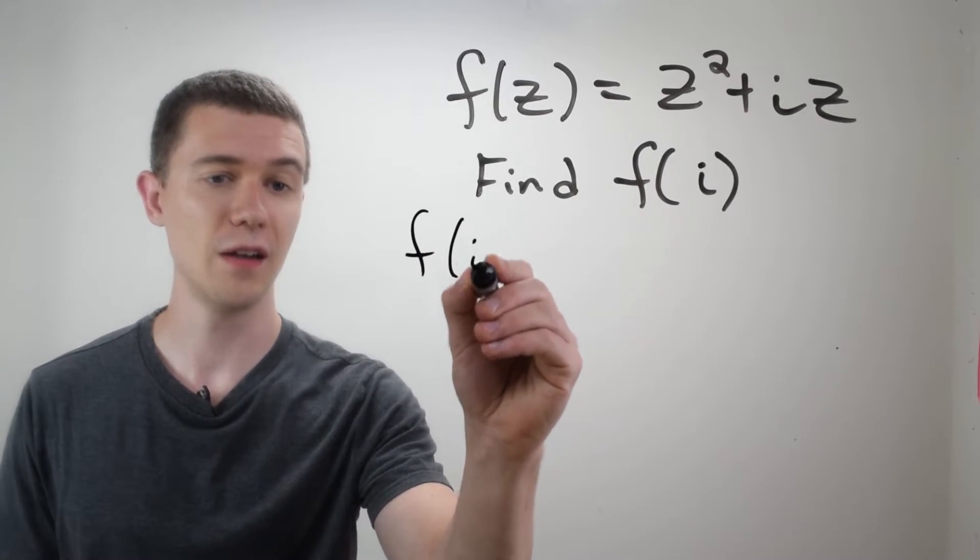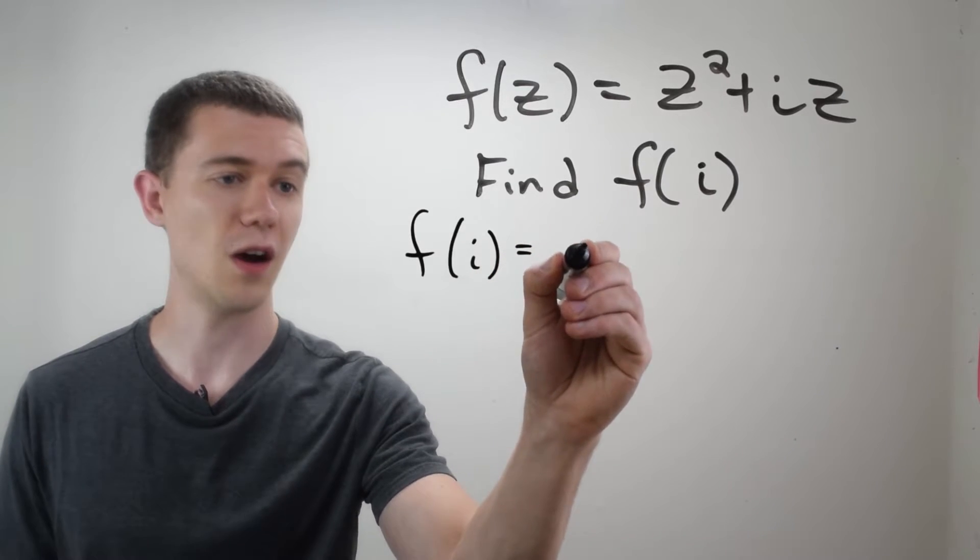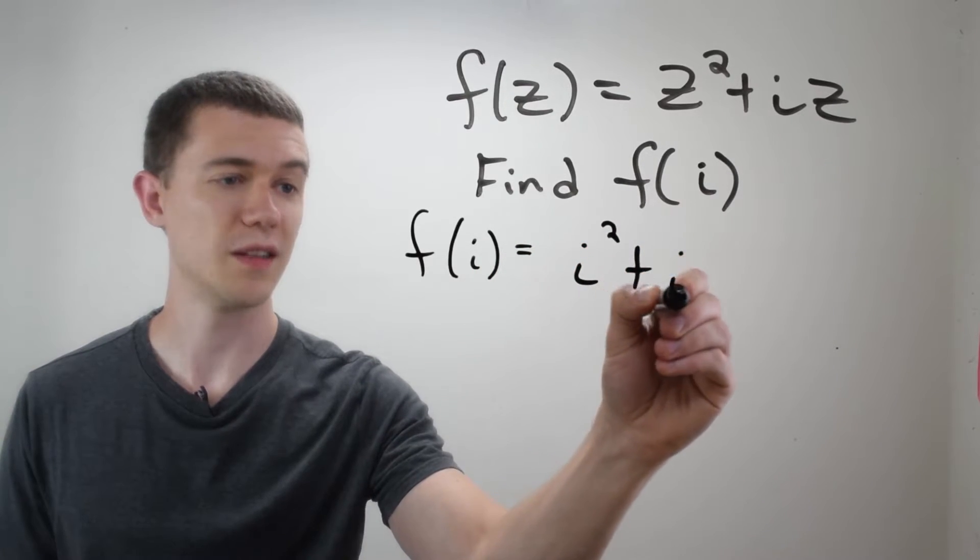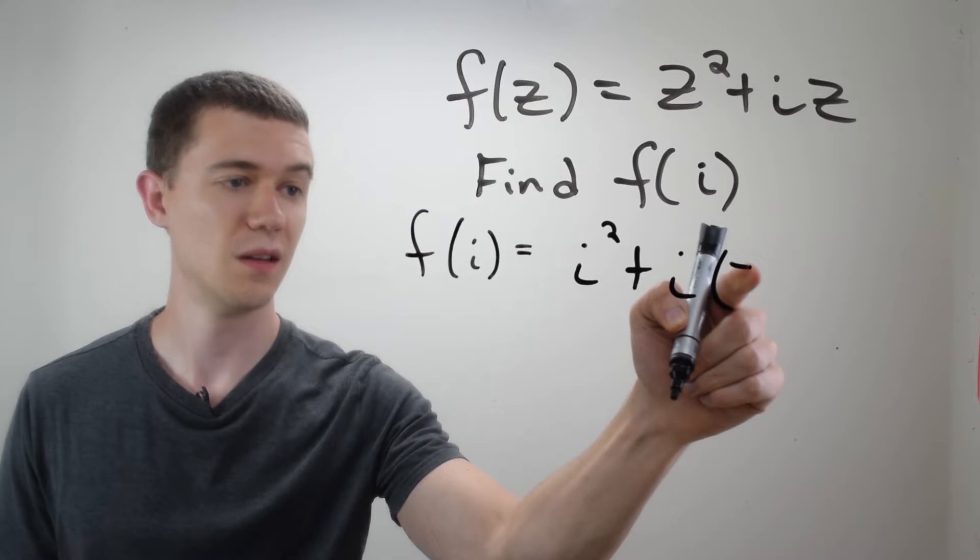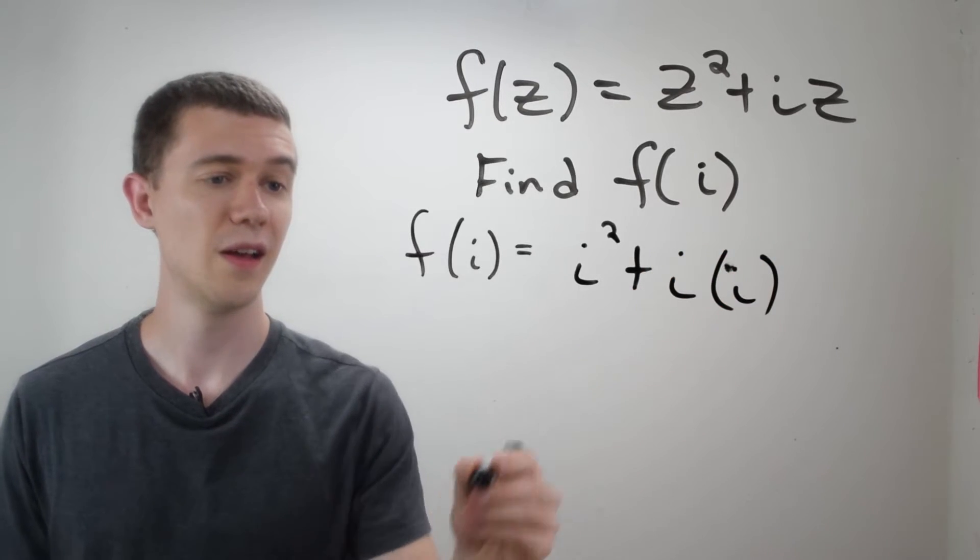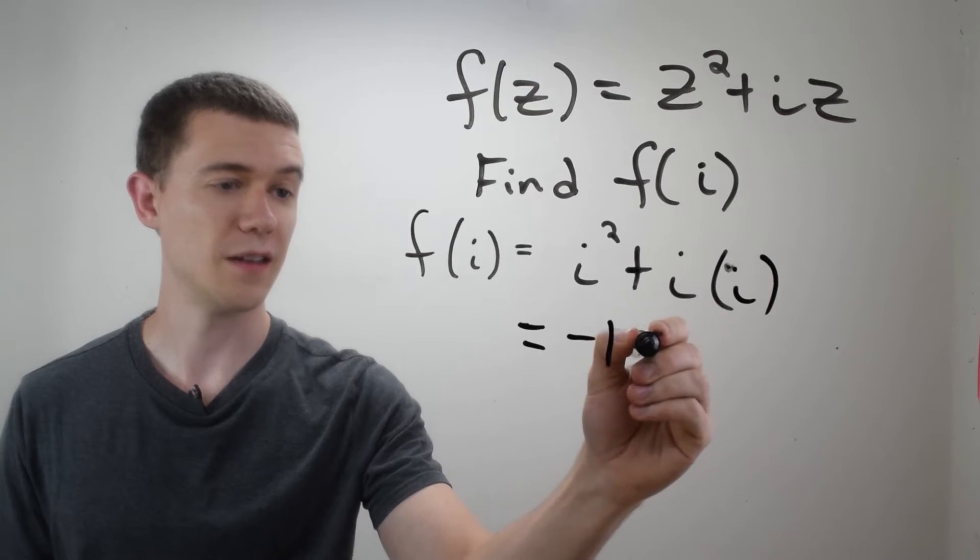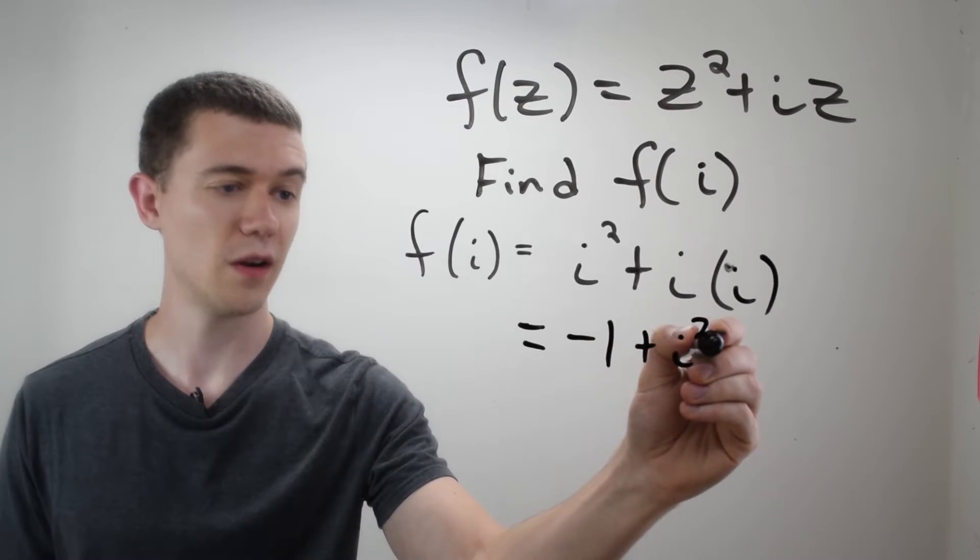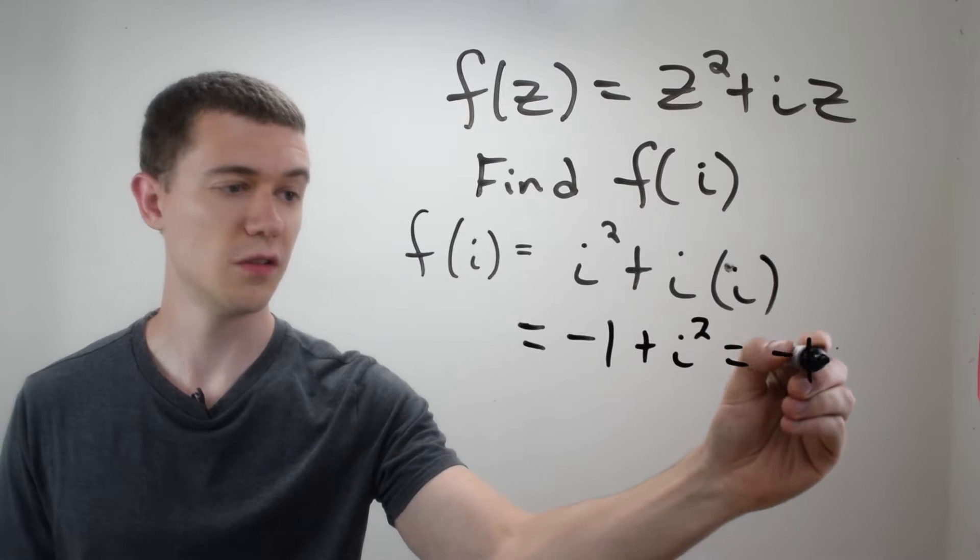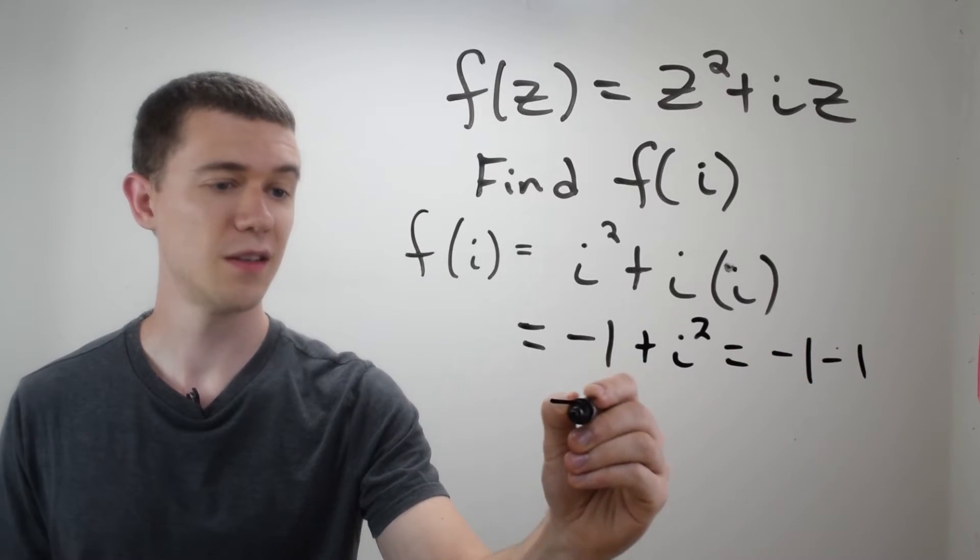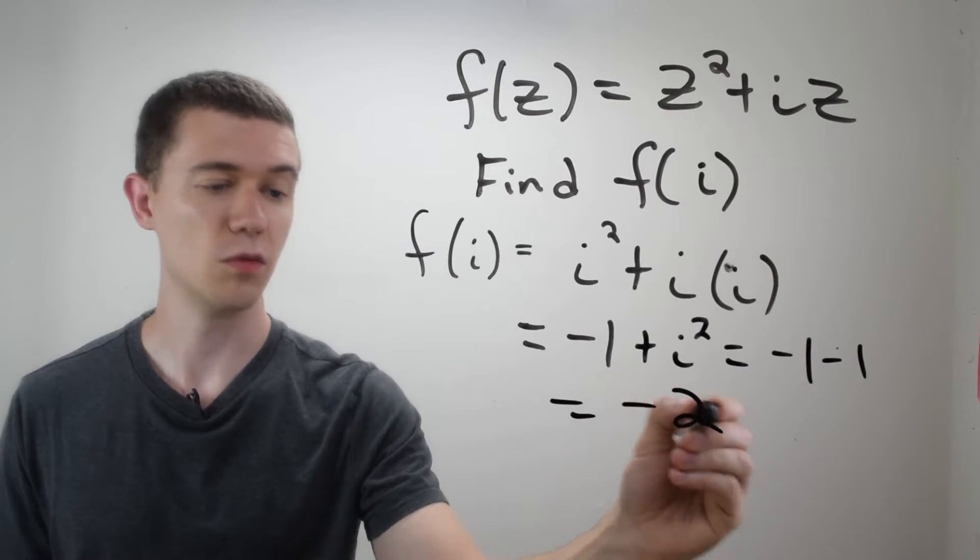So f of i is equal to i squared plus i times i again. And we know that i squared is negative 1. i times i is plus i squared, which is another negative 1. So in this case, f of i is equal to negative 2.